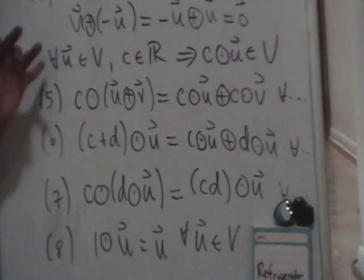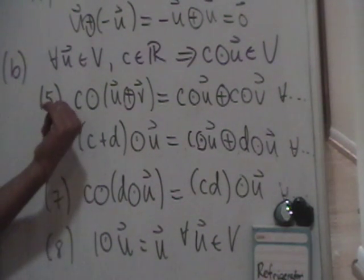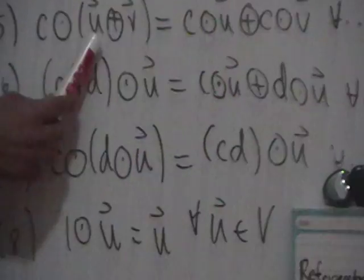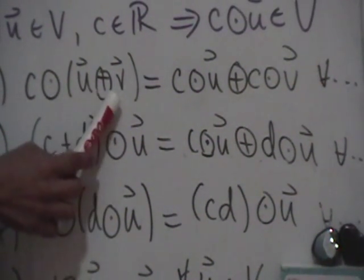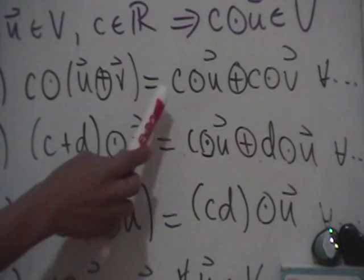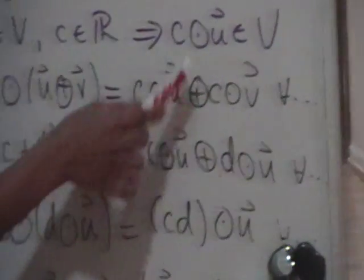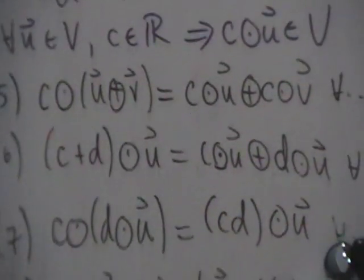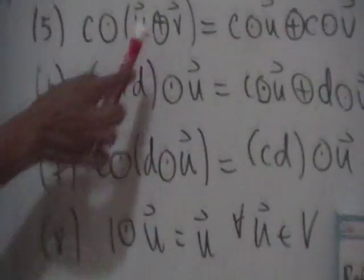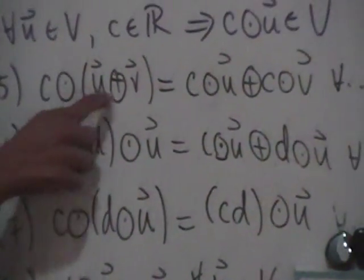Properties five through eight mainly relate to the circle-times operation. Property five says: C circle-times (U circle-plus V) equals (C circle-times U) circle-plus (C circle-times V). You can either apply circle-plus first and then scalar multiply, or scalar multiply each element first and then apply circle-plus. This is essentially the distributive property of circle-times over circle-plus.